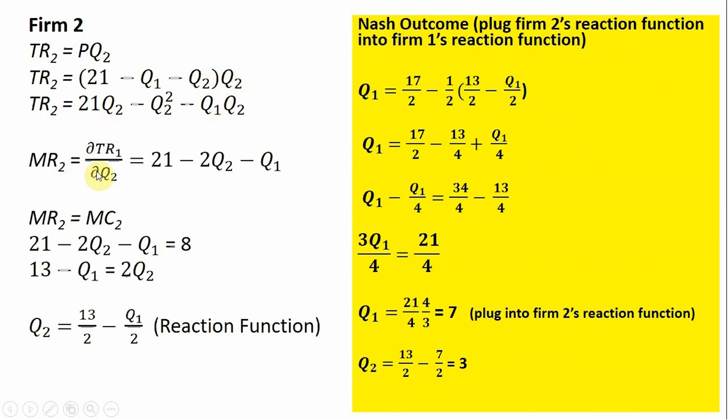So doing that and then taking the partial derivative of Firm 2's total revenue with respect to its output, we get this expression. Like before, we'll set Firm 2's marginal revenue equal to its marginal cost. Its marginal cost, as you recall, was constant at $8. So simplifying and then dividing through by 2, we get Firm 2's reaction function.